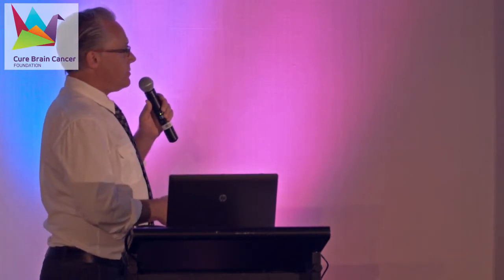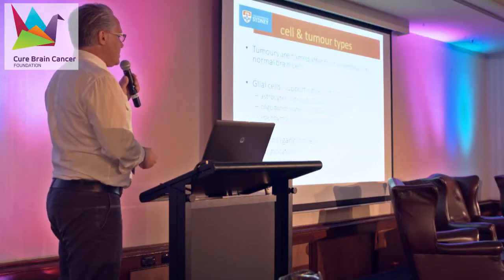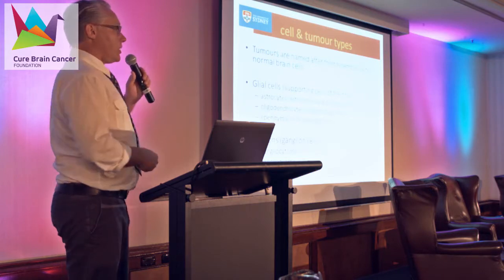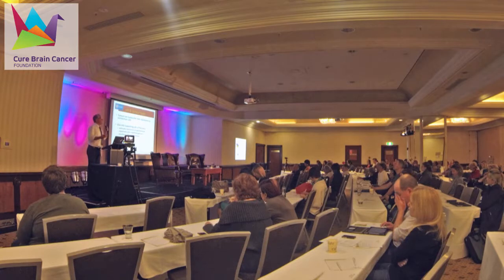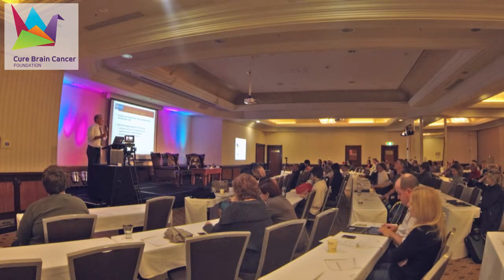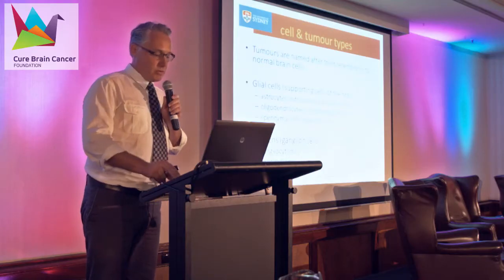Similarly we have ependymal cells and ependymomas. Neurons used to be called ganglion cells, so we have gangliocytoma and ganglioglioma. And it's the same with some of the other tumours like meningiomas, based on the fact that they look like normal meningothelial cells.